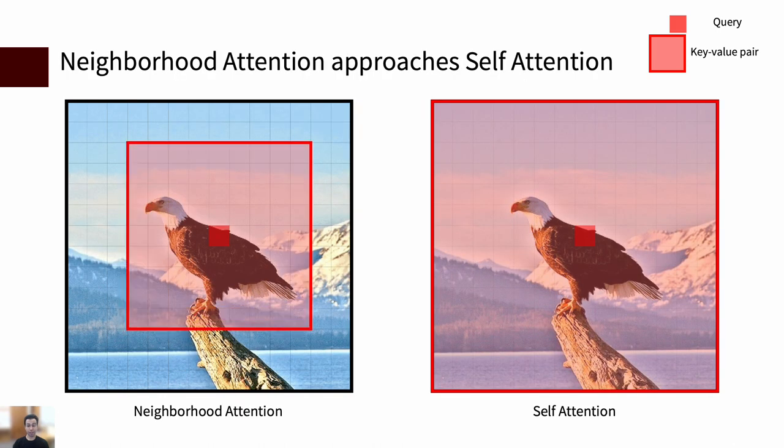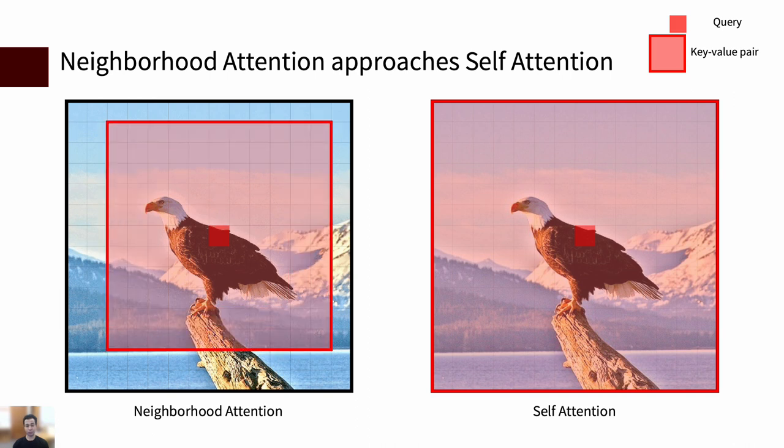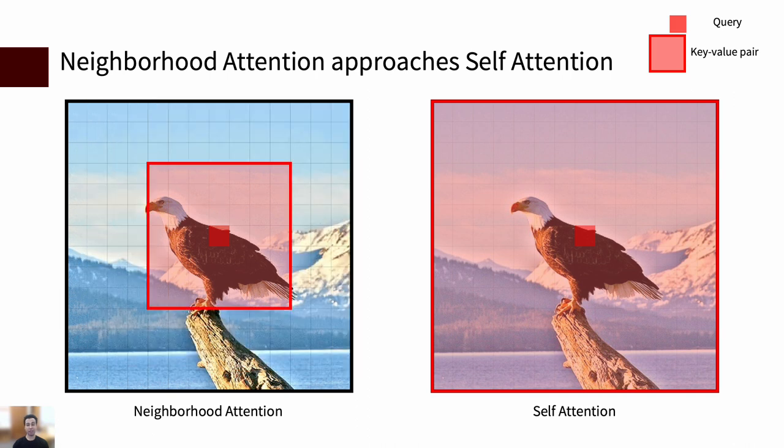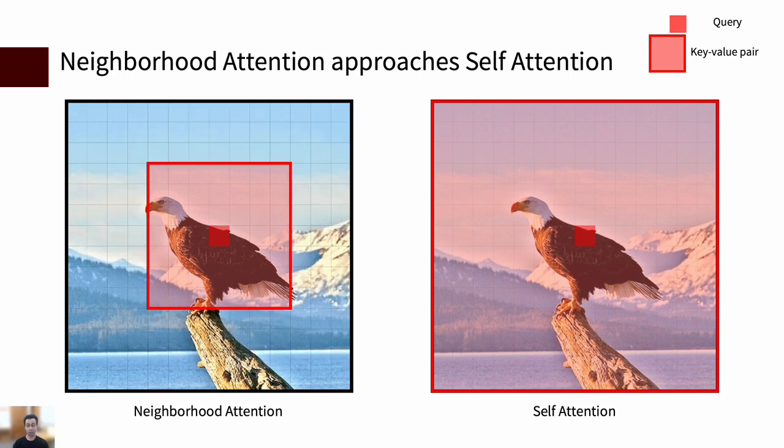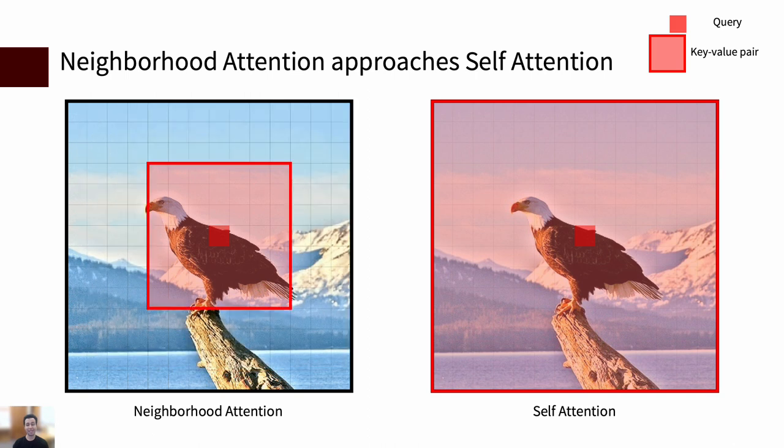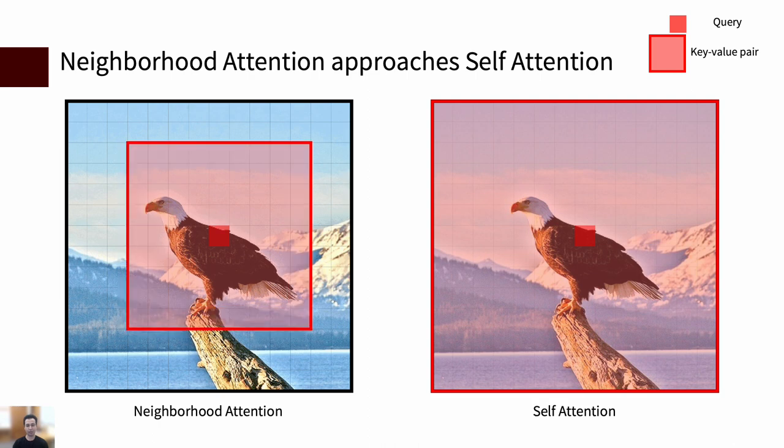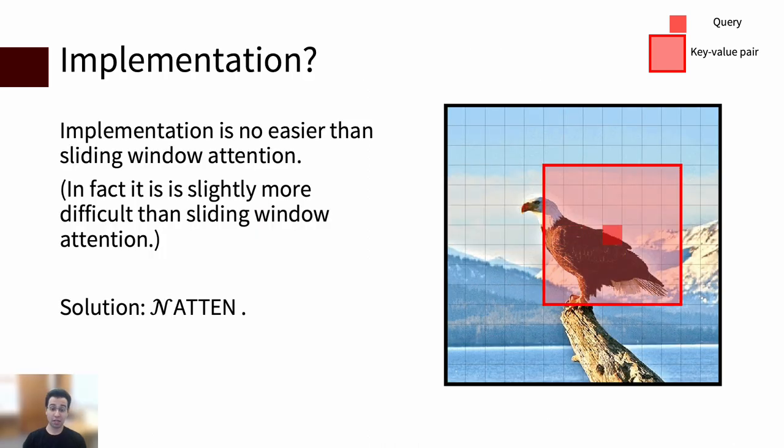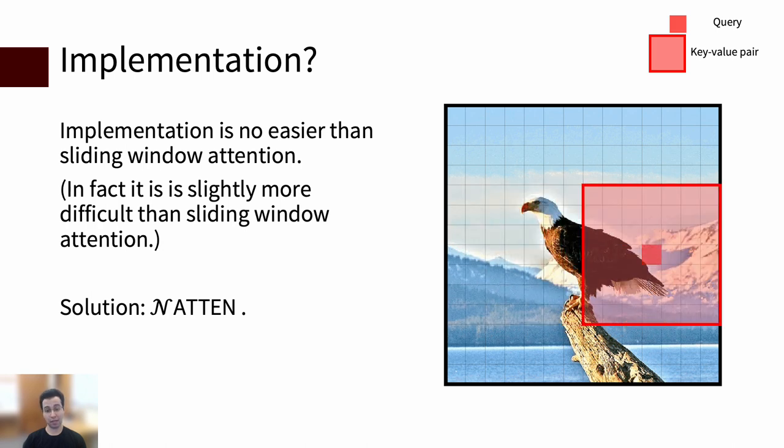So it's basically resolving a key issue in SASA and maintains its useful properties. A new property in neighborhood attention is that it can slowly approach self-attention when we increase window size. This allows you to flexibly reduce interactions in self-attention, whether it's for efficiency or to reduce redundancy, all depends on your application. Implementation remains a challenge and in some ways worsened because this pattern was not directly implemented anywhere.